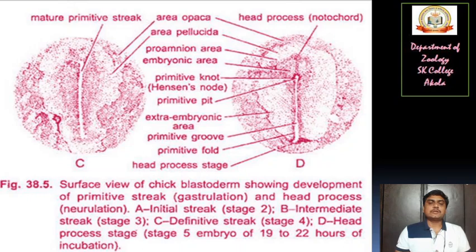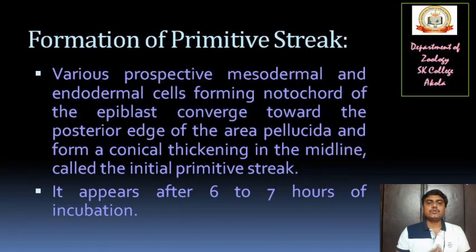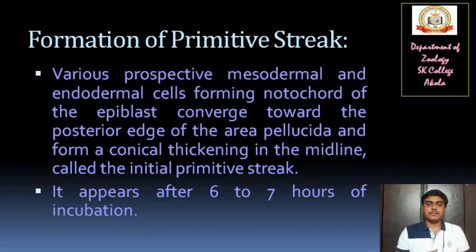All the processes are dependent on the incubation hours or incubation period given by the hen itself, or you may also provide the temperature to the fertilized egg inside an air oven. The various prospective mesodermal and endodermal cells forming the notochord of the epiblast converge towards the posterior edge of the area pellucida and form a conical thickening in the midline called the initial primitive streak.